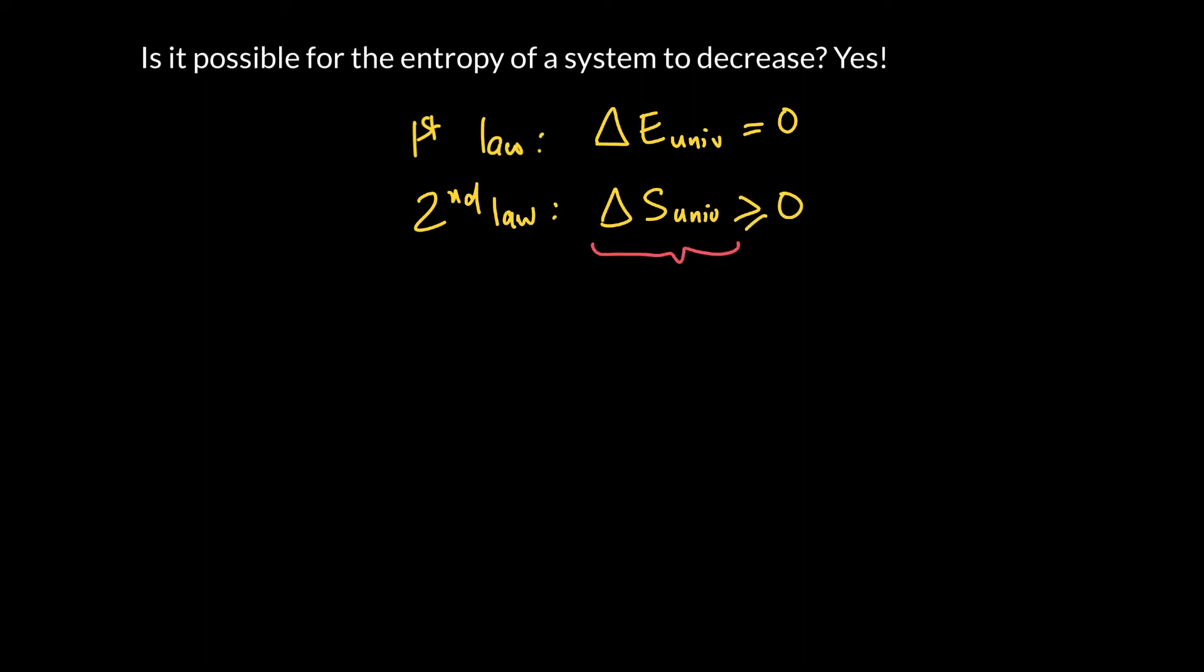But the thing to remember is that the universe is made of two different regions: the system or the chemical reaction, and the surroundings. And so the idea is that the sum total of those two things has to be bigger than zero.